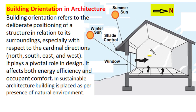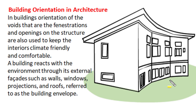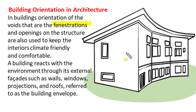Building orientation plays a pivotal role in design. It is very significant as it affects both energy efficiency of building operation and occupant comfort and well-being. In sustainable building designs or in the concept of green architecture, all buildings should be oriented as per the presence of the natural environment and surroundings around that building structure. Once the position of the building is decided, the position and size of voids — also known as fenestration or openings — are also decided.